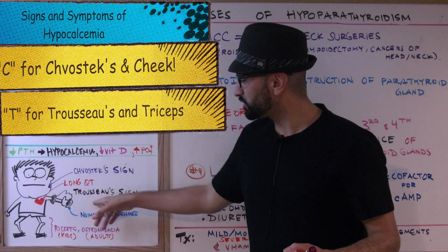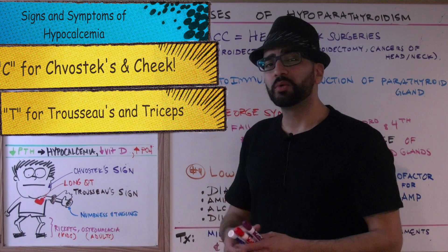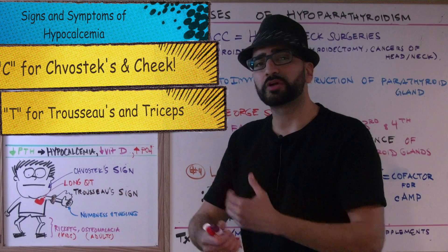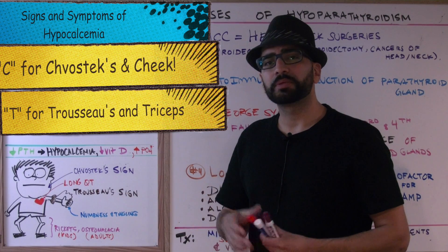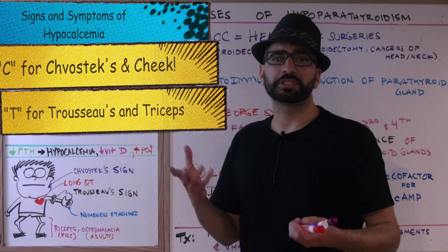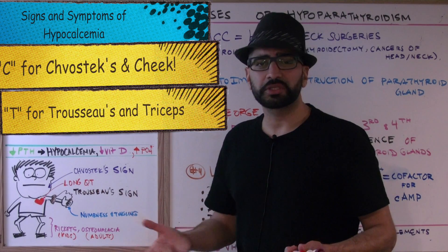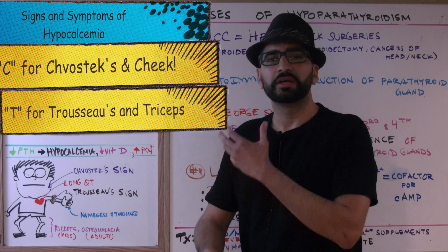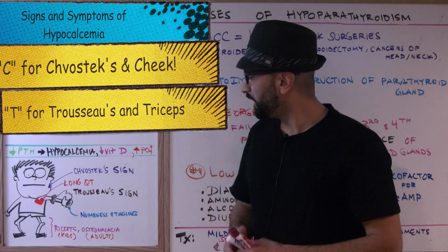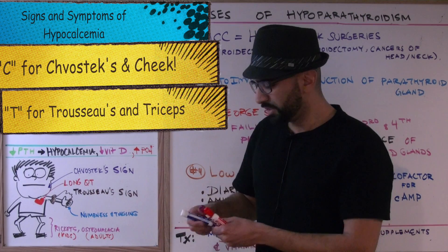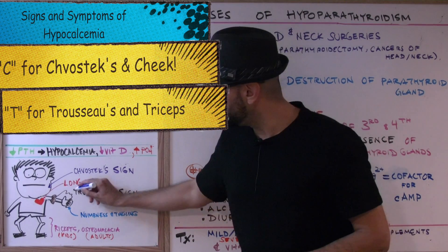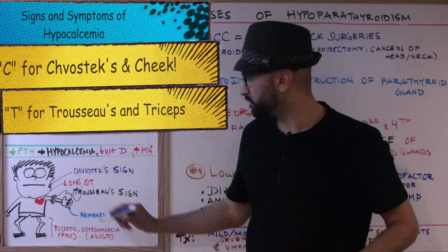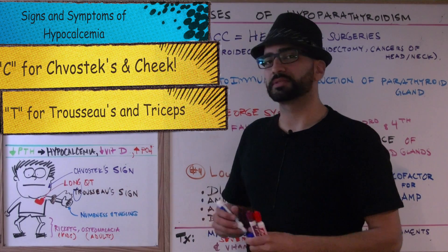The second sign is called the Trousseau sign. You take a blood pressure cuff, wrap it around the patient's brachial artery, and pump up the pressure above the patient's systolic blood pressure. A few minutes later, the patient will exhibit carpal spasms. To remember this, think of the letter T — you're wrapping around the brachial artery, and T also stands for triceps.